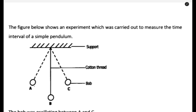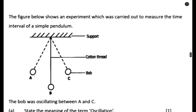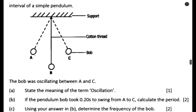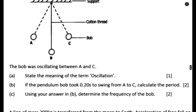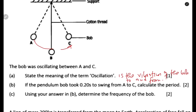Let us look at the second question. The figure shows an experiment carried out to measure the time interval of a simple pendulum. We have a cotton thread, the bob, and the support. The bob oscillates between A and C. The first part asks: state the meaning of the term oscillation. Oscillation is the vibration of the bob to and fro.